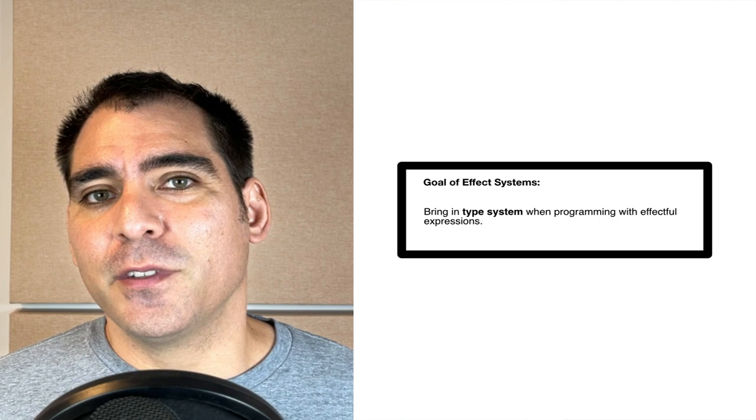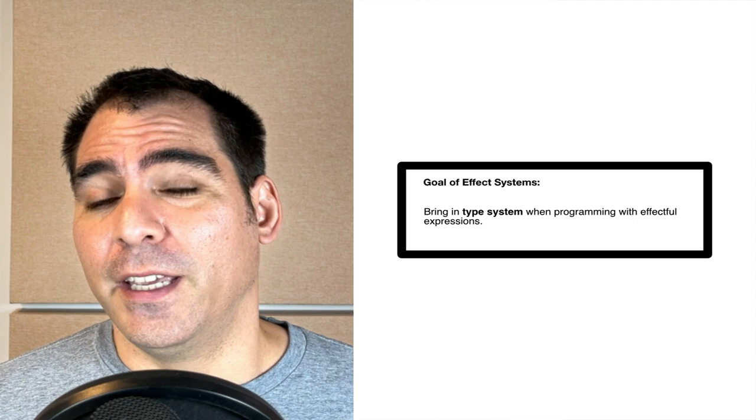Now we get to the actual problem with effectful expressions. The problem is that their observable side effects happen on the side, and that means they are outside of the scope of the type checker of the Scala compiler. So while effectful operations are absolutely necessary to write useful code and you can use them directly in Scala, you do not get the same help from the compiler that you would get using only pure expressions — effectful operations cannot be checked by the compiler. Now enter effect systems.